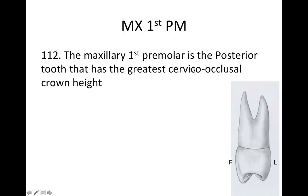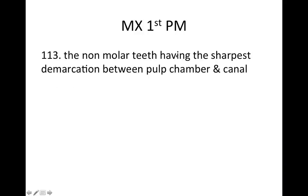The maxillary first premolar is the posterior tooth with the greatest cervico-occlusal crown height — meaning from the CEJ to the tip of the crown, it's the tallest posterior tooth. When you get a question like this, you might think a molar would be the answer, but the maxillary first premolar is actually the tallest of the posterior teeth. It is also the non-molar tooth with the sharpest demarcation between the pulp chamber and canal.